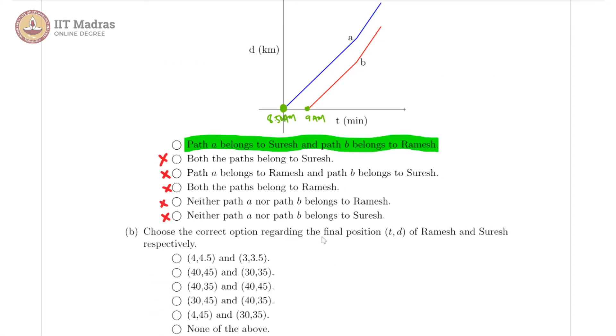Now in the second part, we are being asked the final position t comma d where t must be in minutes and d must be in kilometers. So the coordinates in this particular graph regarding the final position of Ramesh and Suresh respectively.